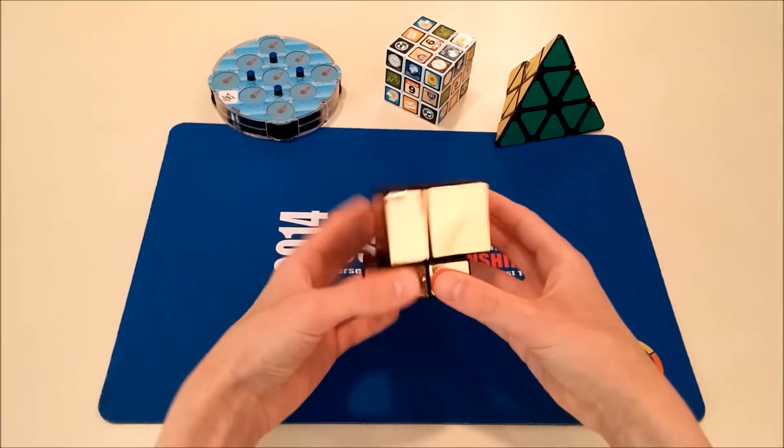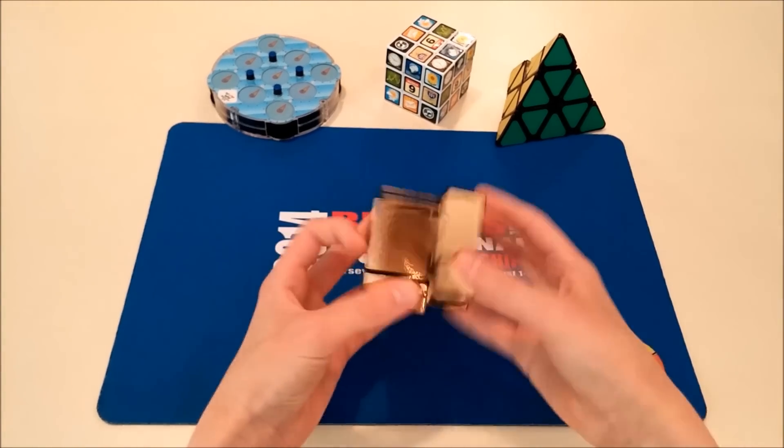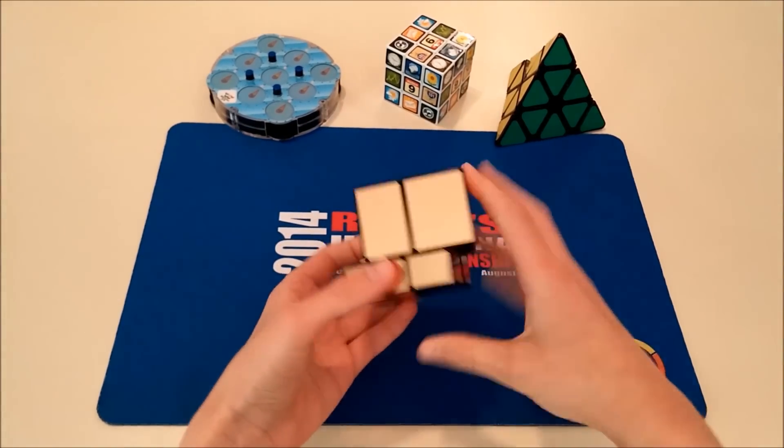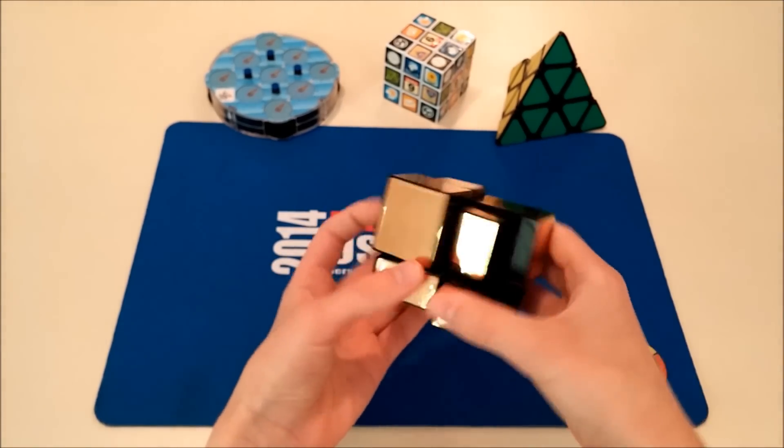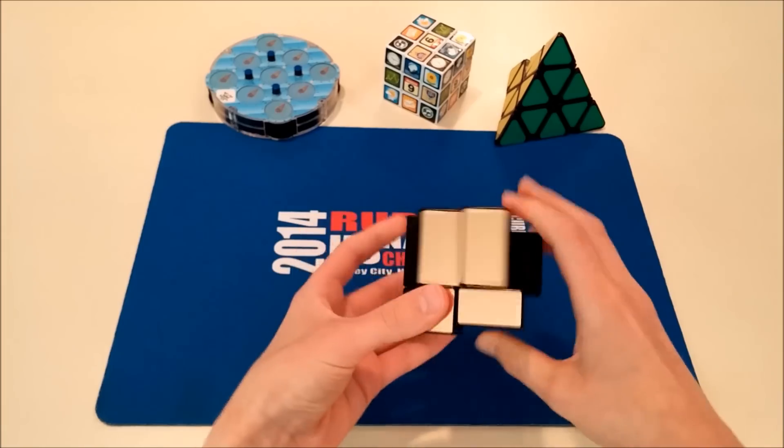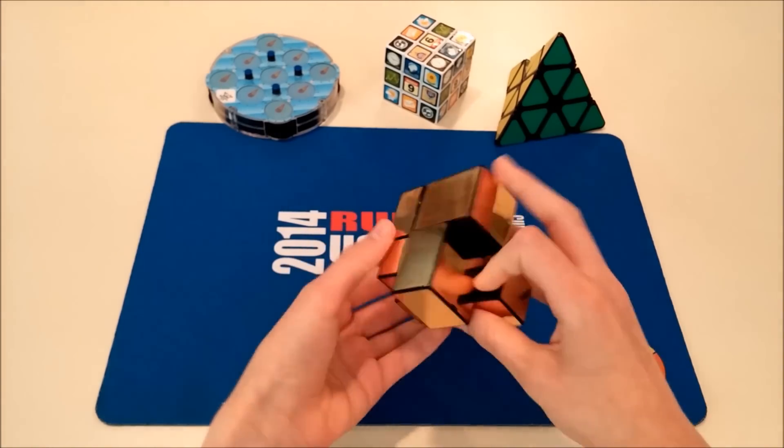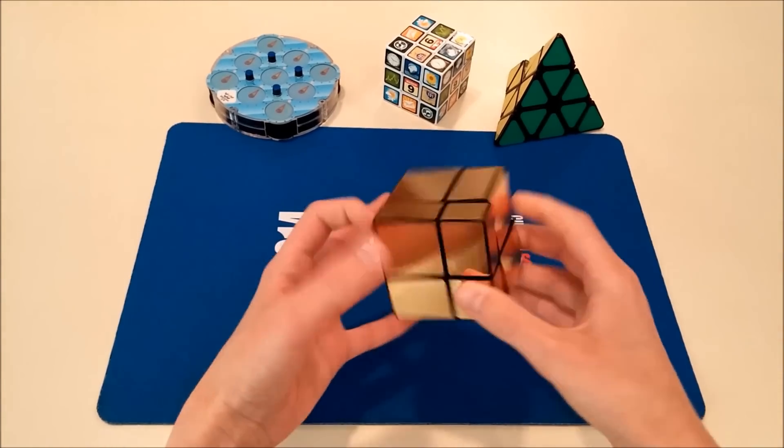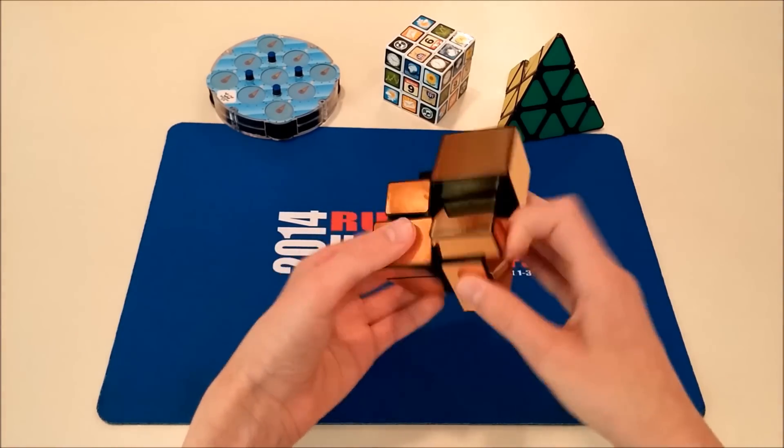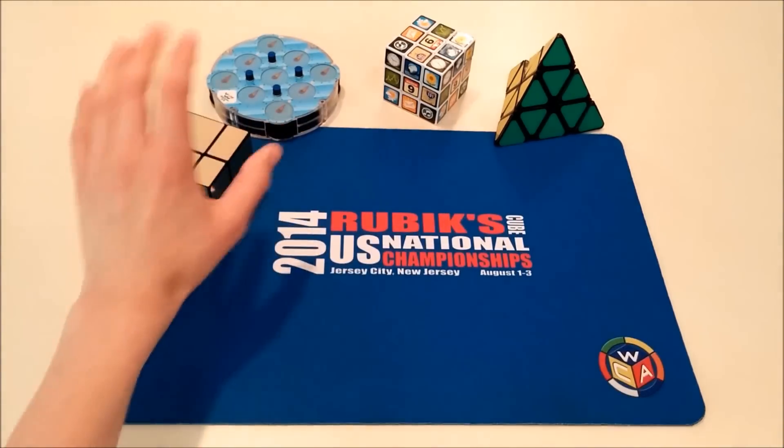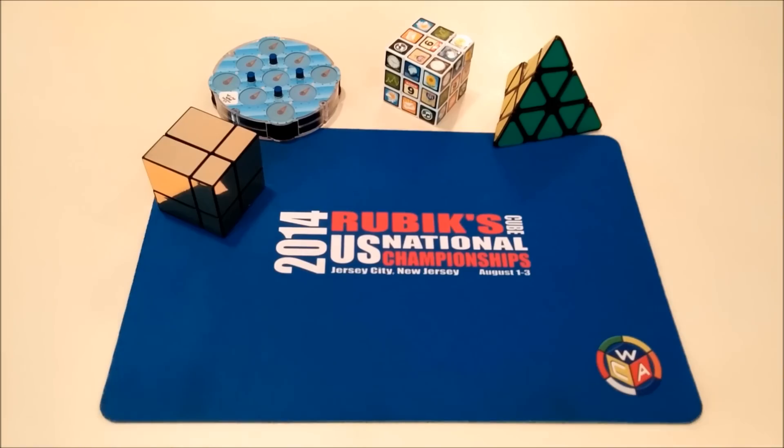The first thing I'm going to talk about is the 2x2 Mirror Cube. This is really cool. I forget what brand actually, but it's actually really smooth. Surprisingly smooth, actually, for a non-WCA type puzzle. It's actually a lot of fun, and I really enjoy playing around with this. That's really cool, and I really like it so far.